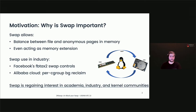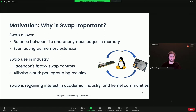Anonymous pages, on the other hand, are swapped out to a swap device. Swap allows the system to efficiently balance file-backed and anonymous pages in memory during memory reclamation. Some have even advocated to use the swap device as a memory extension mechanism. Swap is regaining interest in academia, with recent works proposed to offload the swapping mechanism to dedicated hardware.